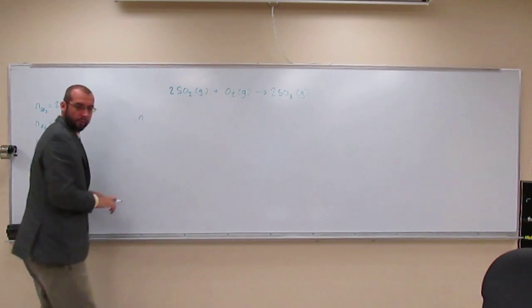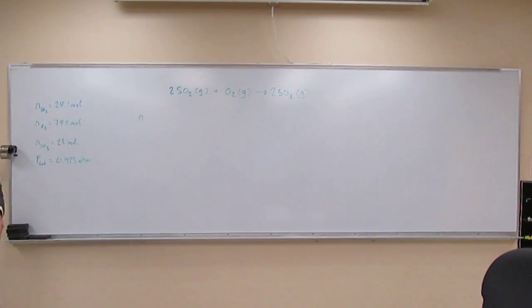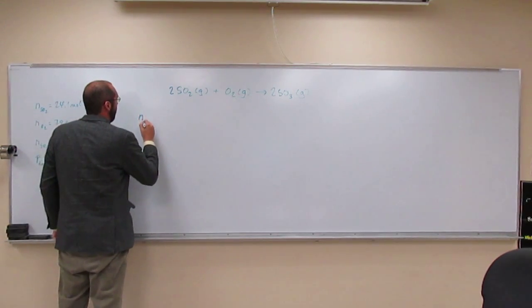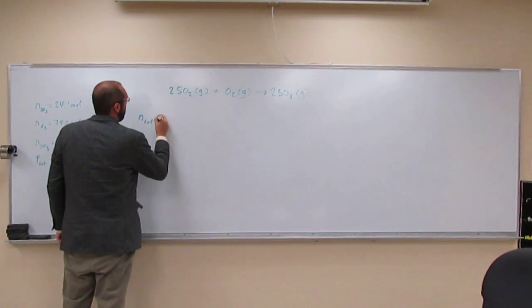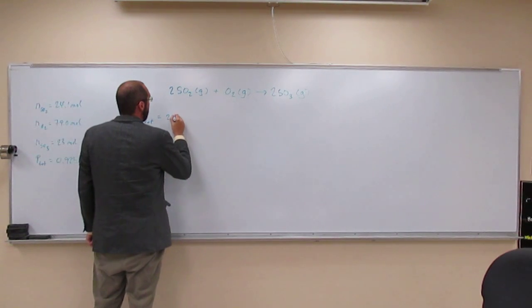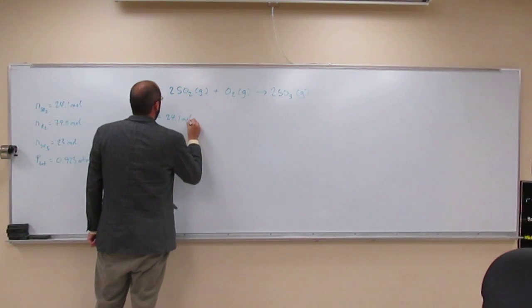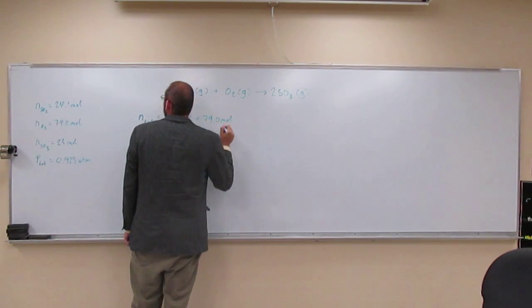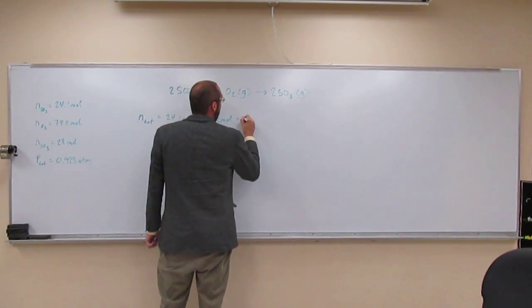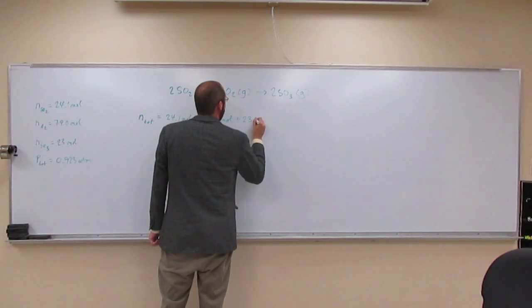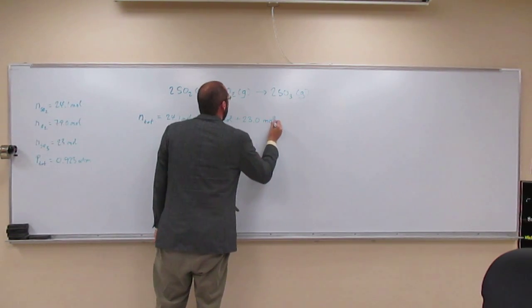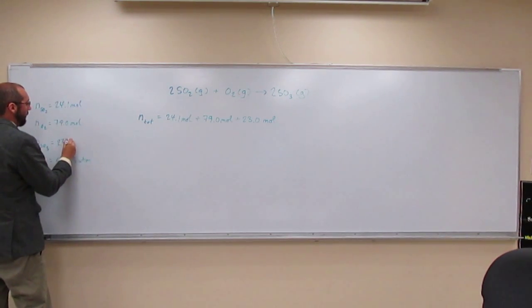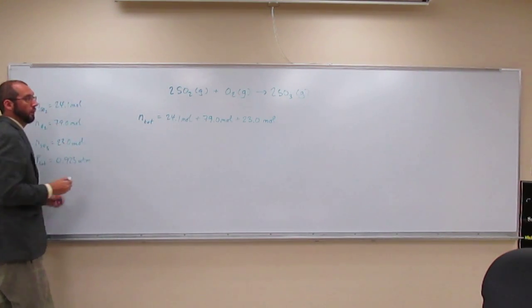To do that, you simply add them all up. The number of moles total is going to be 24.1 moles, 79.0 moles, and 23 moles. Let's change that to 23.0 so we don't have any significant figure issues.